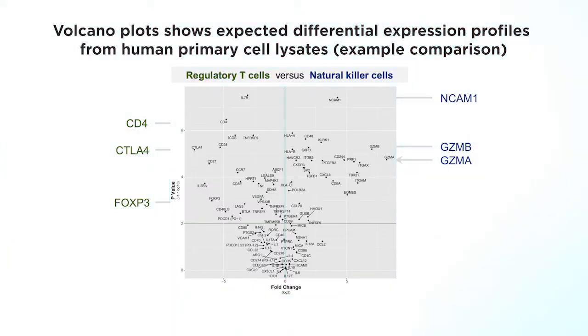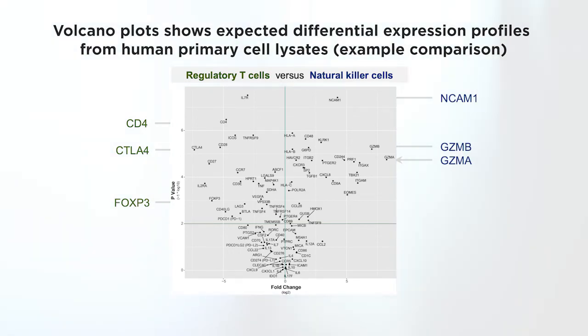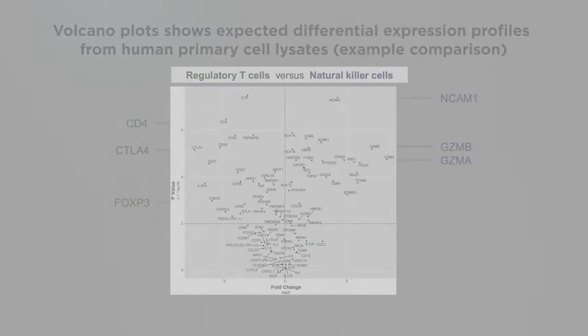These are examples of four adherent cell lines, four suspension cell lines, and four primary cell types across human and mouse, showing that purified RNA data looks very similar to data obtained with the crude lysates.